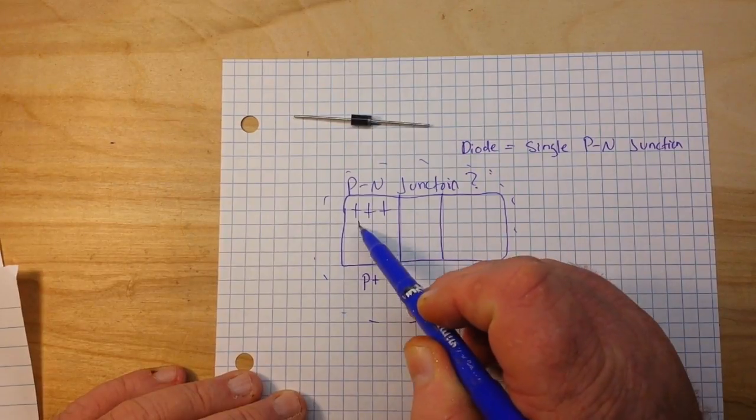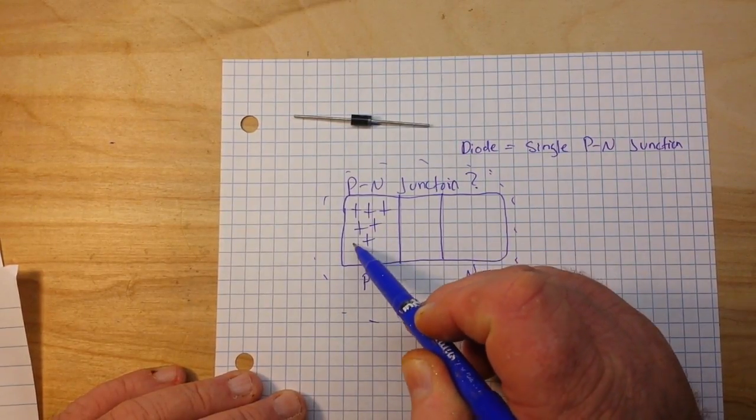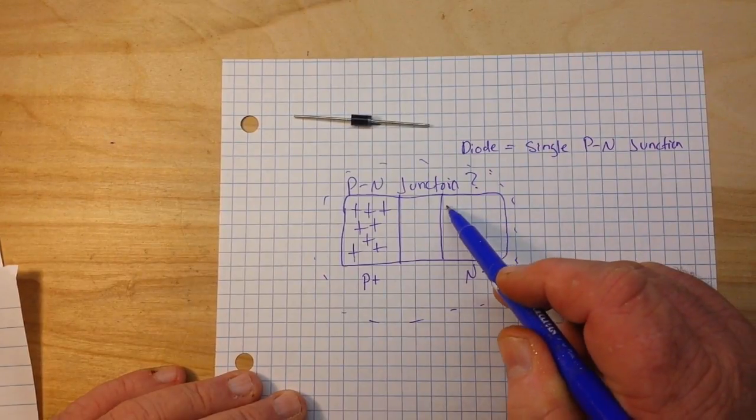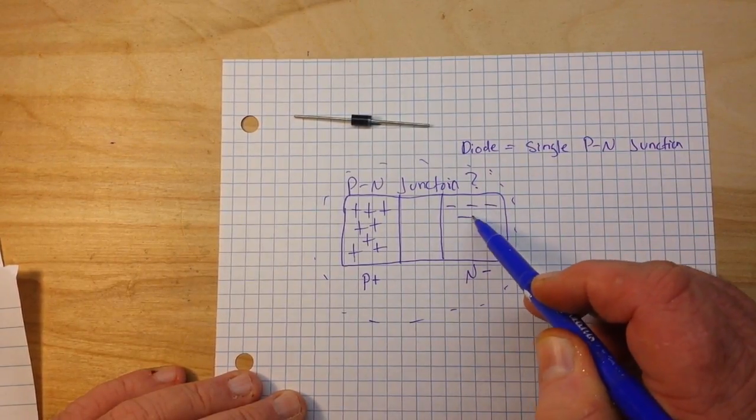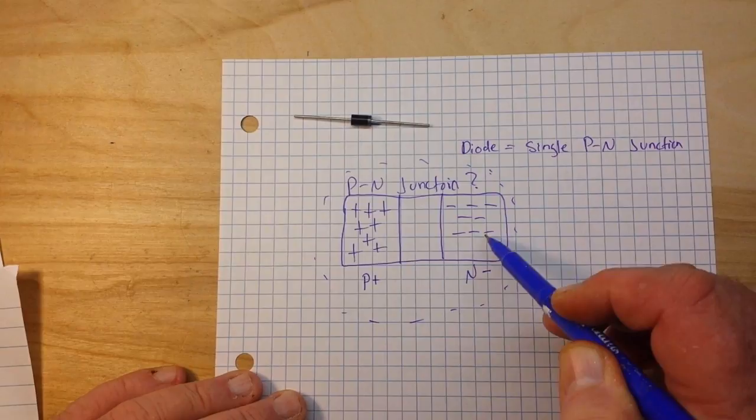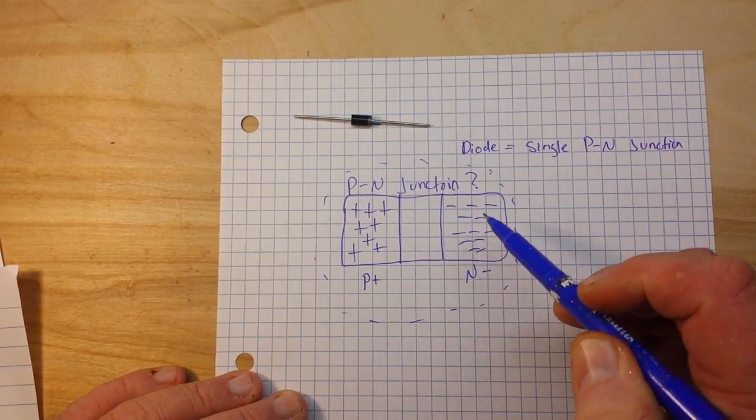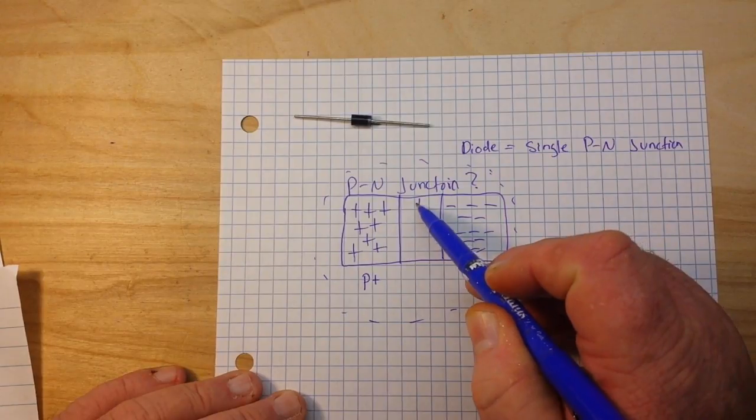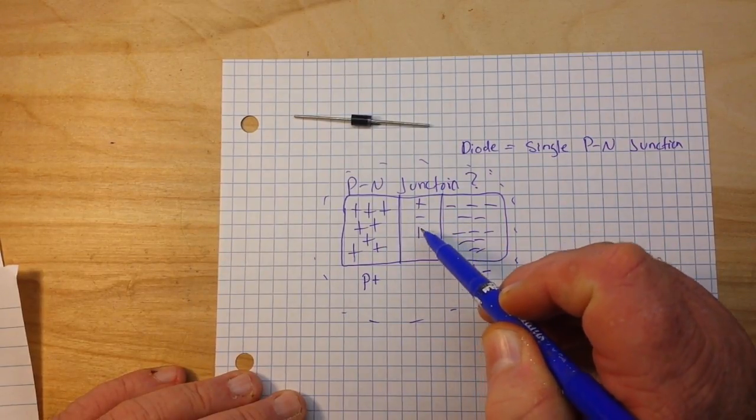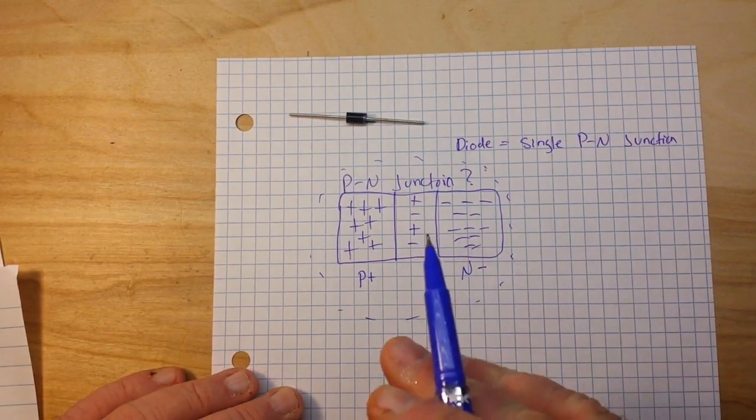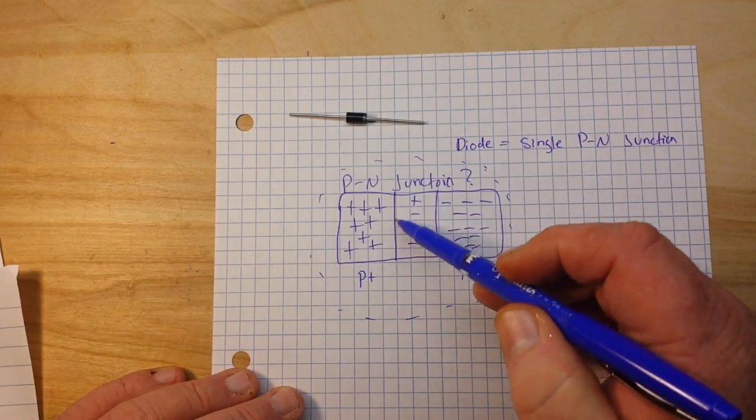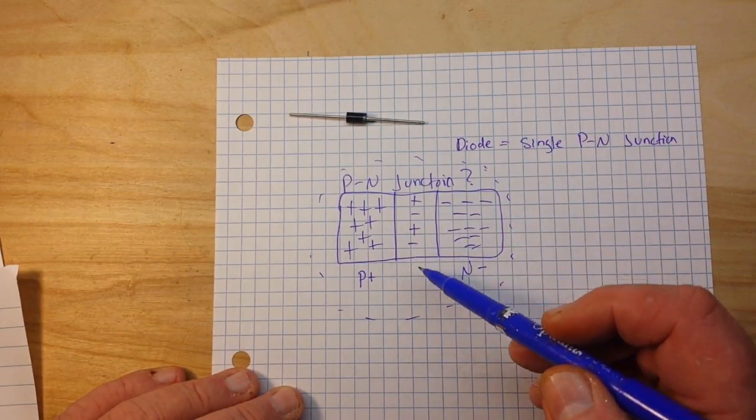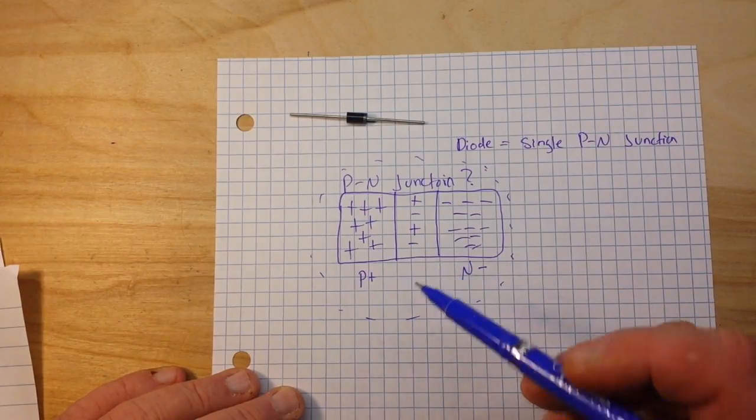So we have positively charged ions here. We have negatively charged ions here. And in here, we have basically a combination of the two. This is the interface, the boundary. This is the P-N junction.